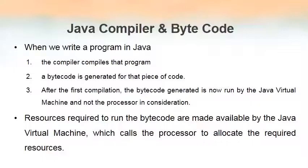In Java, when we compile the Java program, the compiler converts it into something known as bytecode. Bytecode is the output file we get after Java compilation — it is what the Java compiler produces. The speciality of this bytecode is that it is neither a high-level language nor a machine language. The bytecode we get after compilation cannot be read by us, and our computer is also not able to read it.